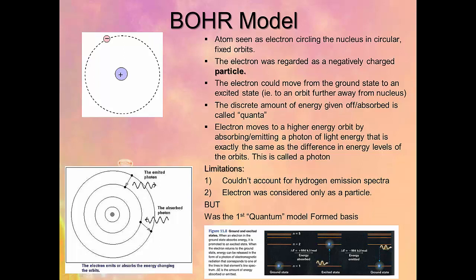There are limitations to this model. First, it couldn't account for the hydrogen emission spectra. Second, the electron was considered only as a particle. But it was the first quantum model and formed the basis of the quantum mechanical model we use now. The diagram shows an electron moving to a higher energy state and then returning to the ground state, emitting a photon of light.